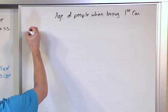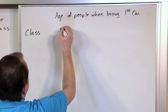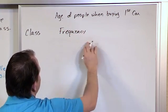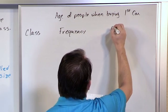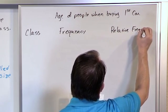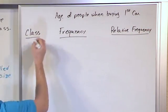Here is our distribution. We have a class, we have a frequency, and then we have a relative frequency - we'll do this part later.